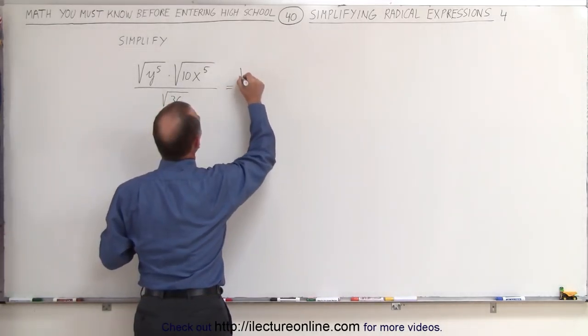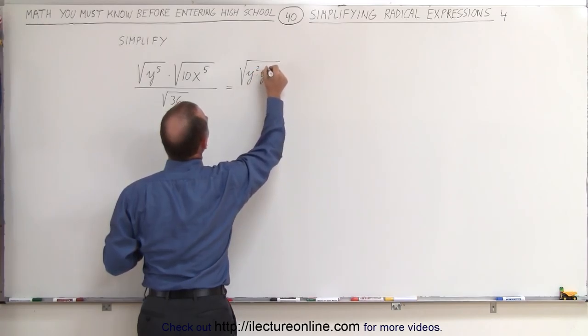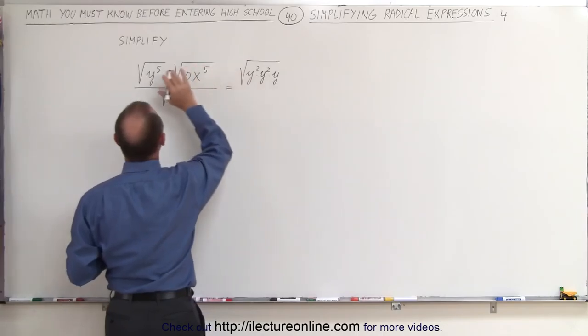Here we have the square root of y to the fifth, which can be rewritten as the square root of y squared times y squared times y. When you multiply together, this gives you y to the fifth.